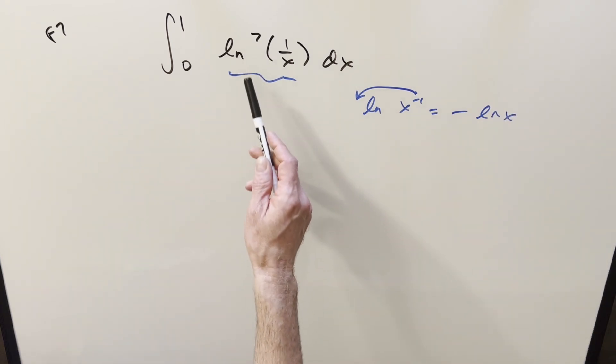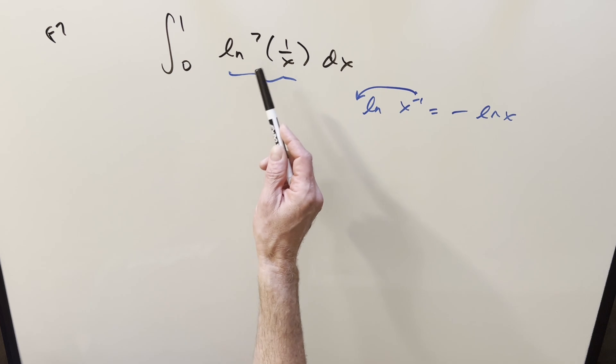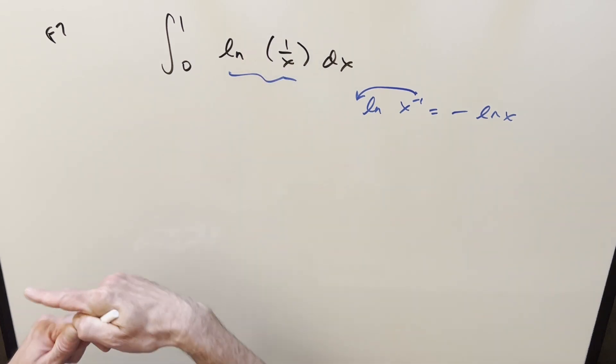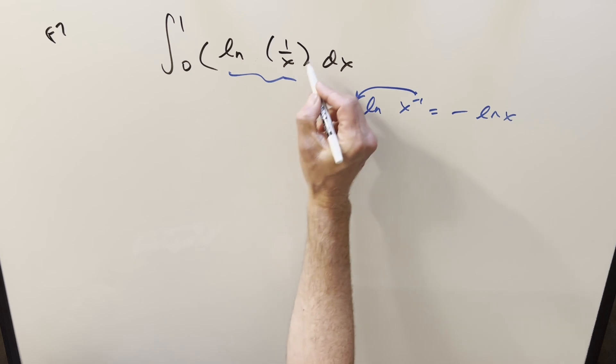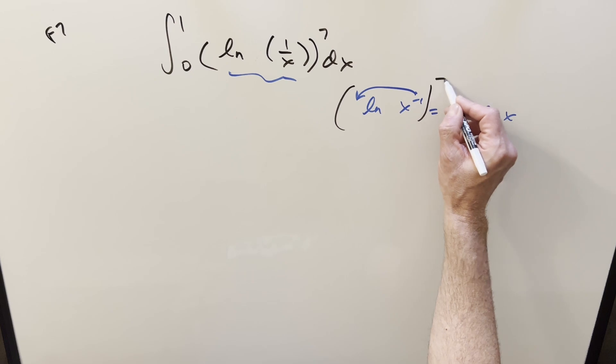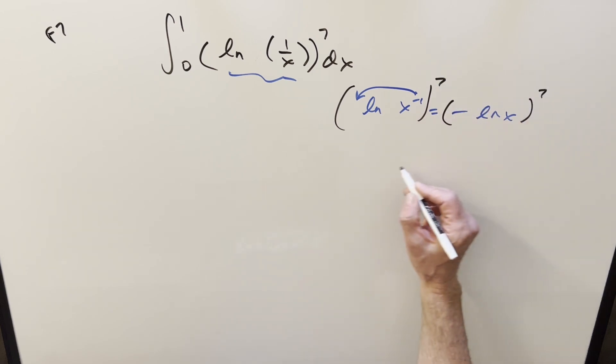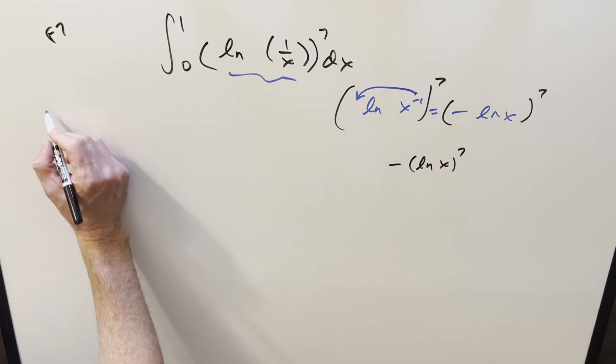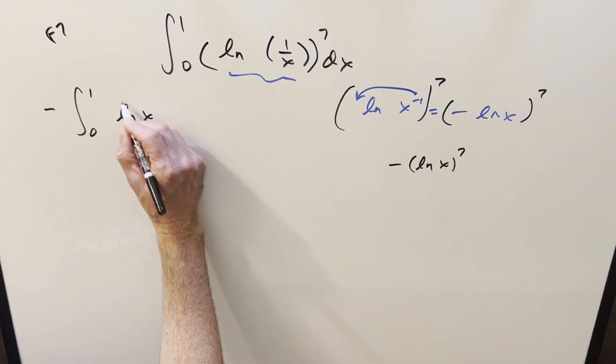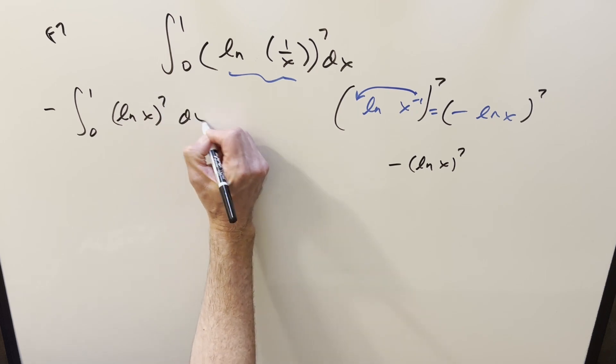But keep in mind this is to the 7th power, and you might not like this notation. You could actually put parentheses around it. I could write it like this, and we could write it all to the 7th just to be more clear. So with the odd power, if we take this all to the 7th here, what's going to happen? It just becomes minus ln(x) to the 7th. So let's rewrite it that way. I'll take the minus sign out front of the integral, and we just have natural log x to the 7 dx.